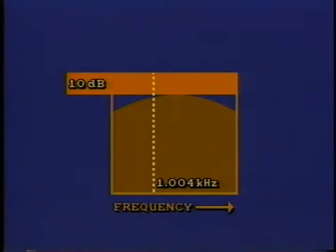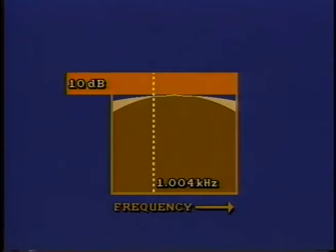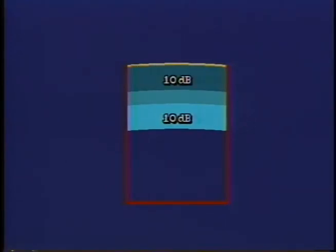If a dial-up line is ordered as a data line, the line must meet tighter standards from the jack to the central office. At 1004 hertz, the signal can still be down as much as 10 dB. But at a frequency of 2700 hertz, losses can be no more than 3 dB more than the loss at 1004 hertz. An example of the worst-case connection on a call would be 10 dB in each subscriber loop and 5 dB between switching centers. With an output signal level of minus 9 dB from the data set or modem, you would have a minus 34 dB received signal level. Experience has shown that you usually have a received level nearer minus 27 dB.